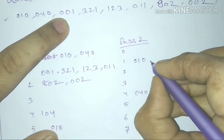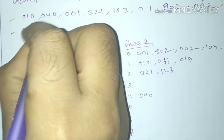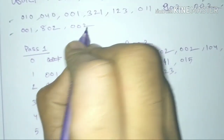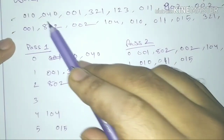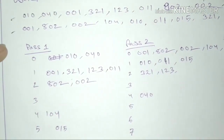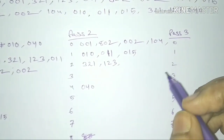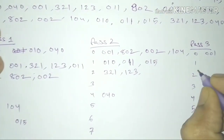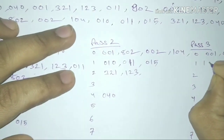Step by step, we place the values into the buckets. After the second pass, the values we get are placed accordingly. Then in Pass 3, again we create buckets from 0 to 9, and we place the remaining values: 001, 802, 002, 100, 104.